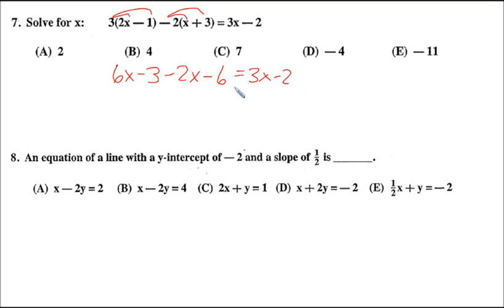So our goal, first of all, is to combine all the like terms and really to get all the x terms to one side and all the numbers to the other side. So let's start combining like terms. I see a 6x and I see a −2x. There is a −3 and a −6, so let's simplify the whole left-hand side then. We'll get 4x − 9 = 3x − 2.